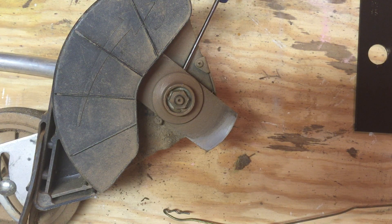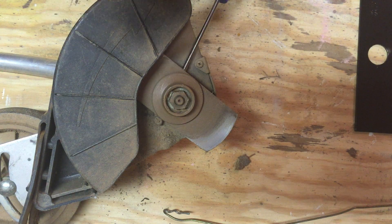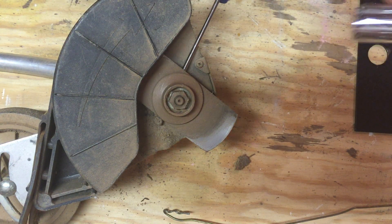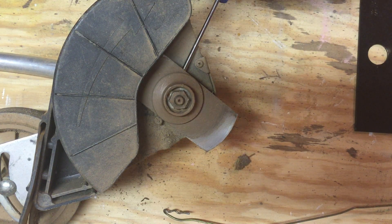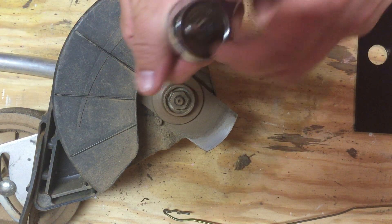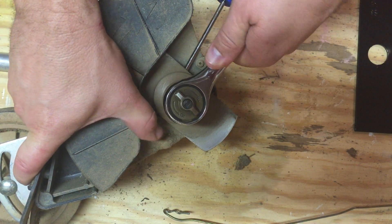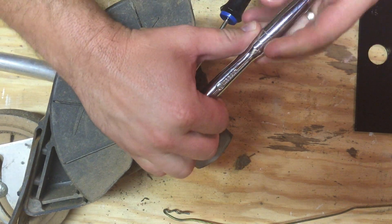The next step is to find a socket that fits your nut. Mine is 11 sixteenths. So use your socket. Make sure it's... These are actually threaded backwards. So make sure it's in the position to rotate clockwise to loosen it.